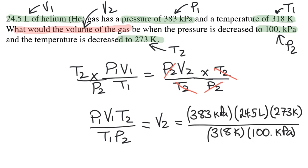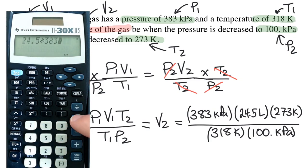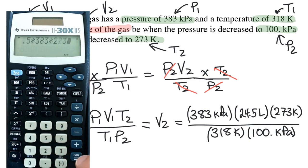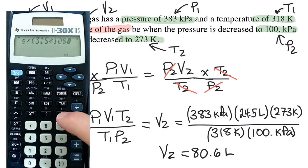Now I can just plug in all of the variables that I've already labeled. Now let's plug all of this into our calculator. 24.5 times 383 times 273. And then I'm going to divide this by 318 times 100.